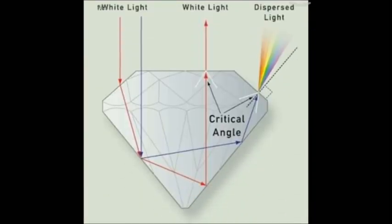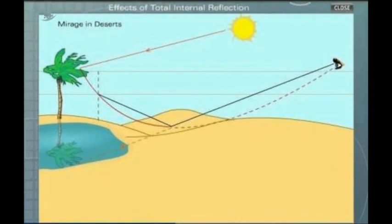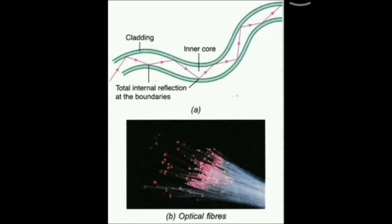The glitter seen in a diamond is also due to total internal reflection. Another effect is that of a mirage in a desert — an illusion seen on very hot days, especially in desert areas. Optical fibers, used to transmit information from one point to another, also work on the principle of total internal reflection.